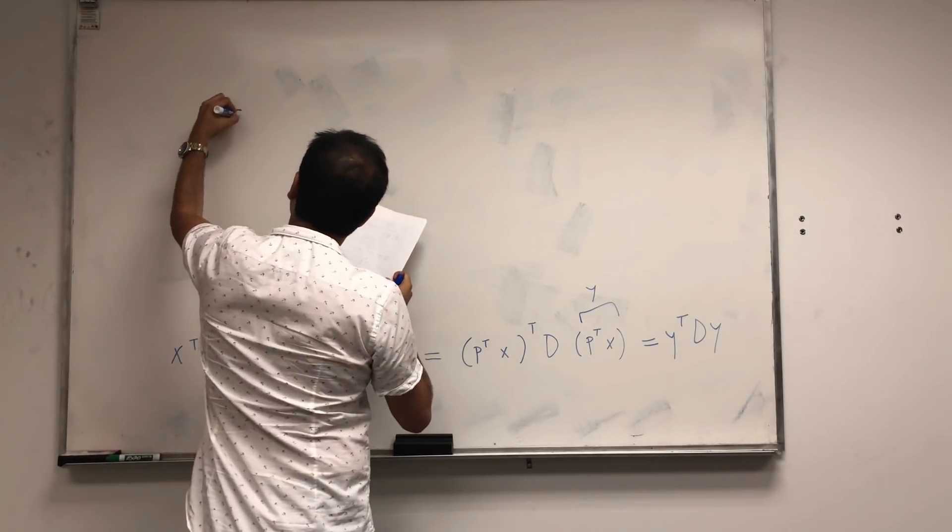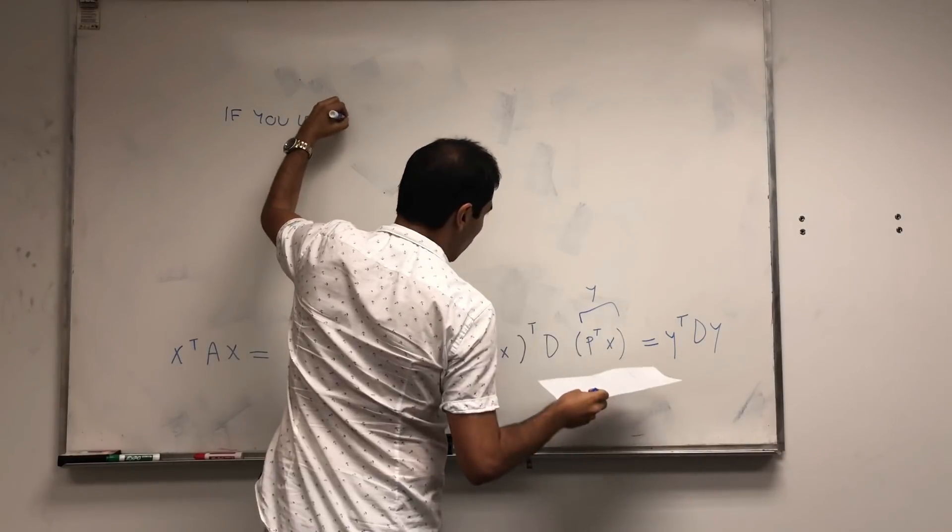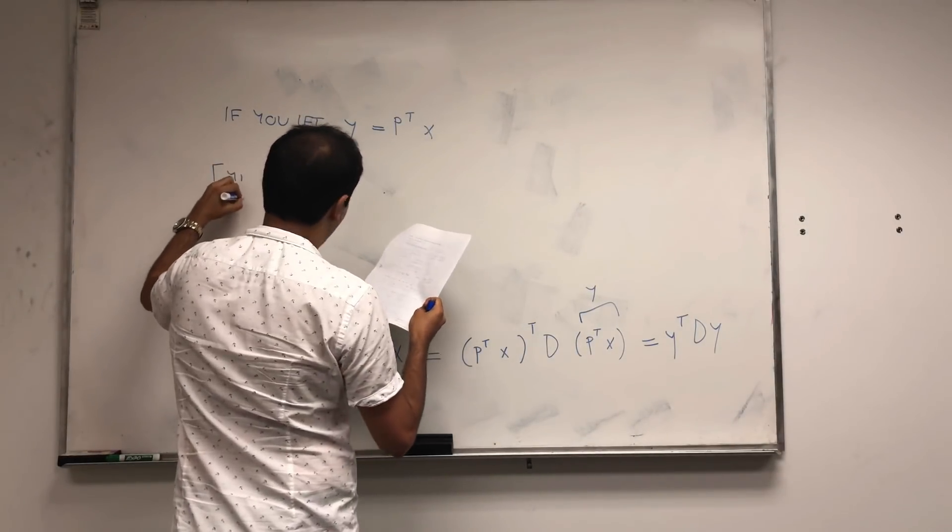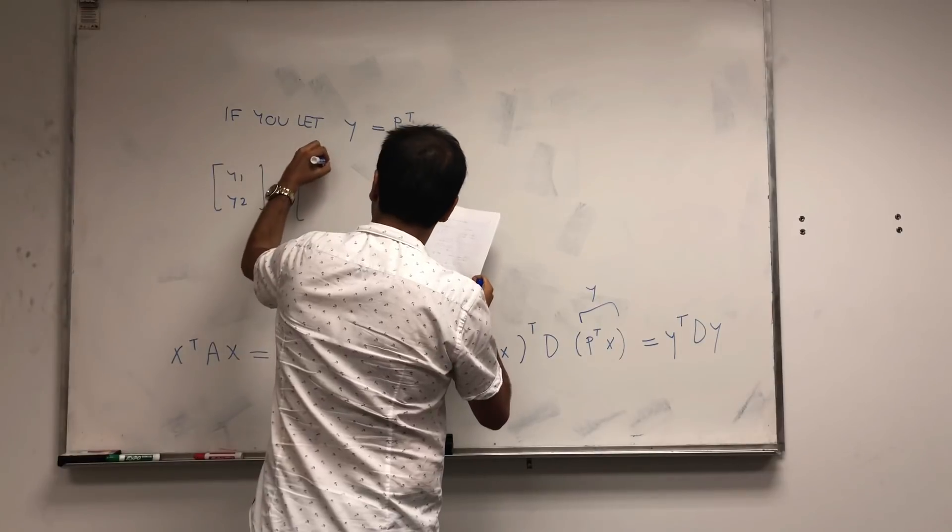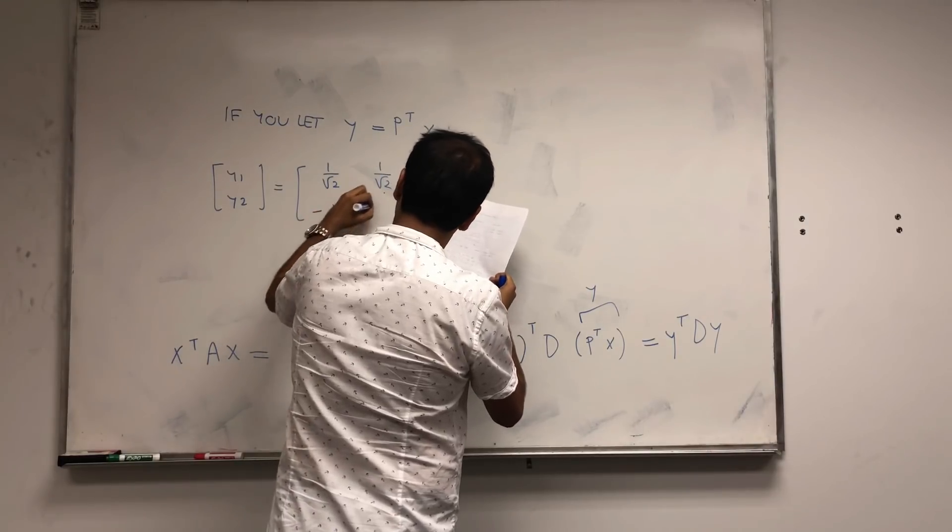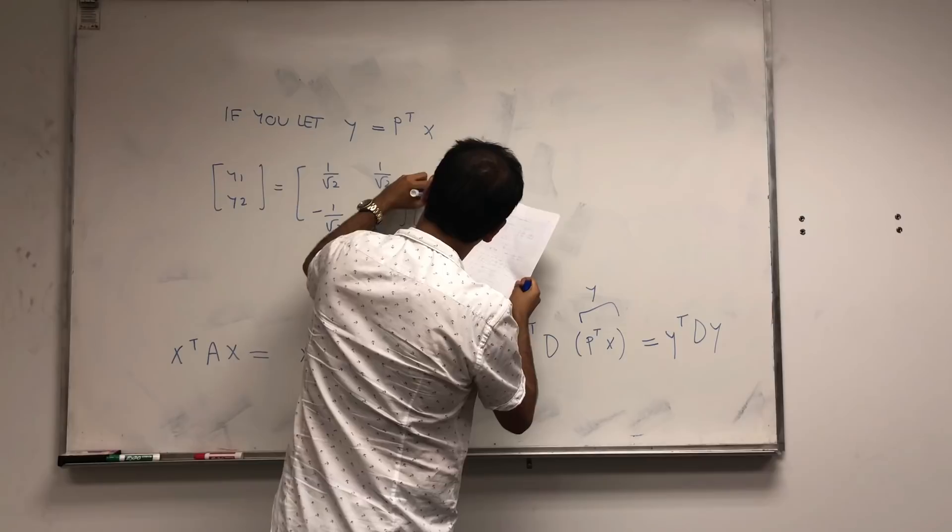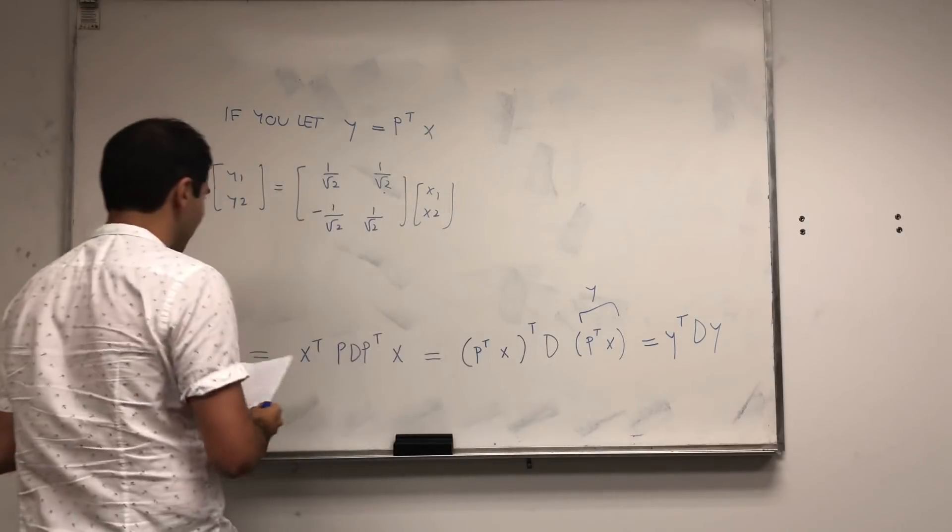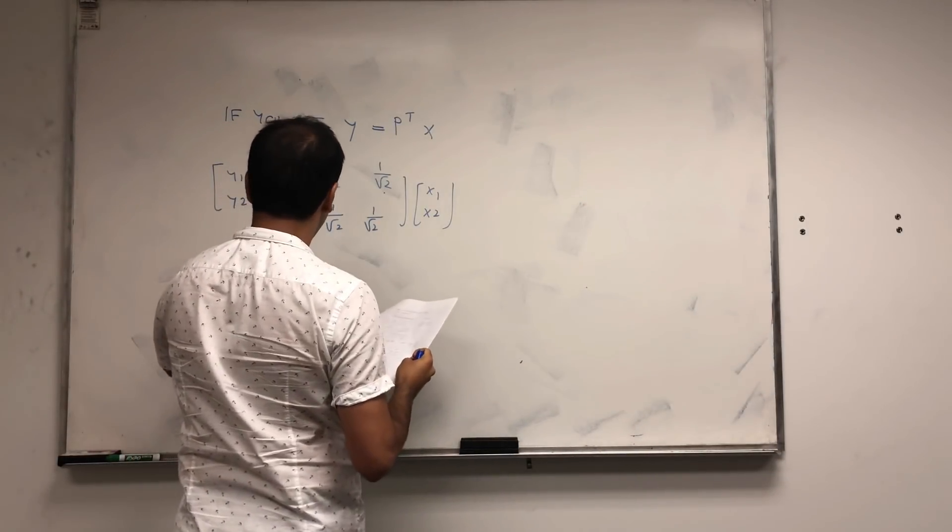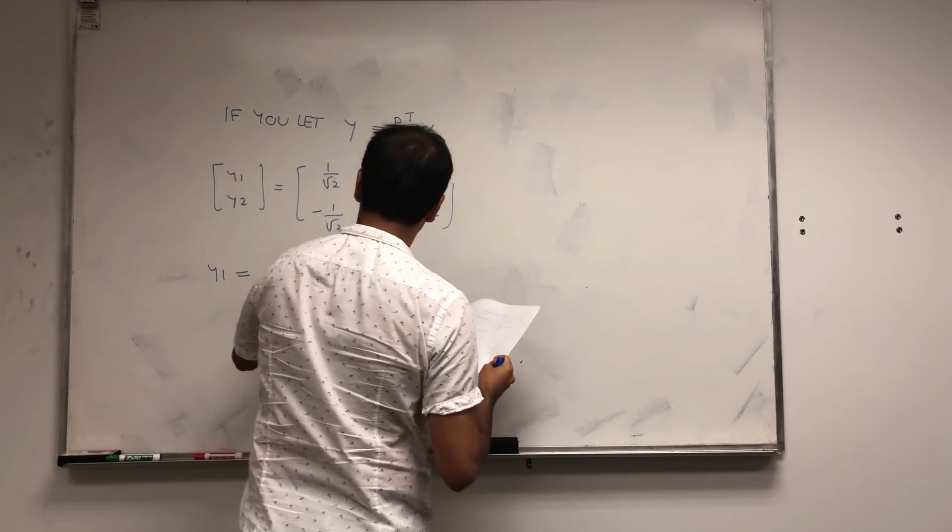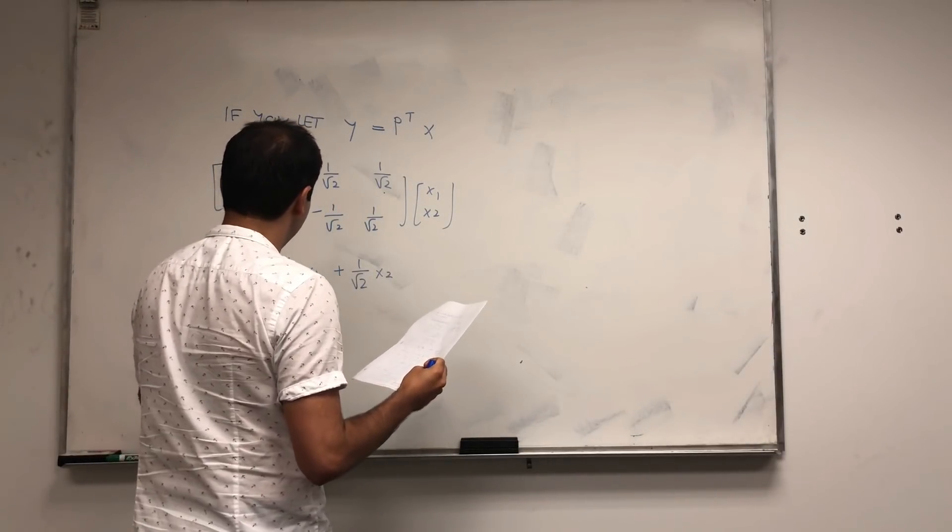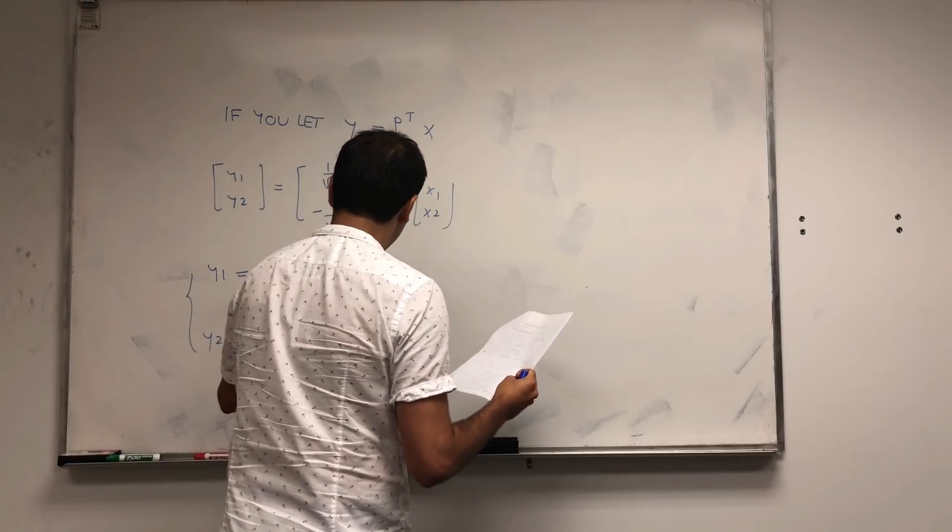So just to summarize, if you let Y is P transpose X, so in other words, if Y is Y1, Y2, that's the same thing as 1 over the square root of 2, 1 over the square root of 2, minus 1 over the square root of 2, 1 over the square root of 2, of X1, X2. So Y1 is X1 plus X2 over the square root of 2, and Y2 is minus X1 plus X2 over the square root of 2.